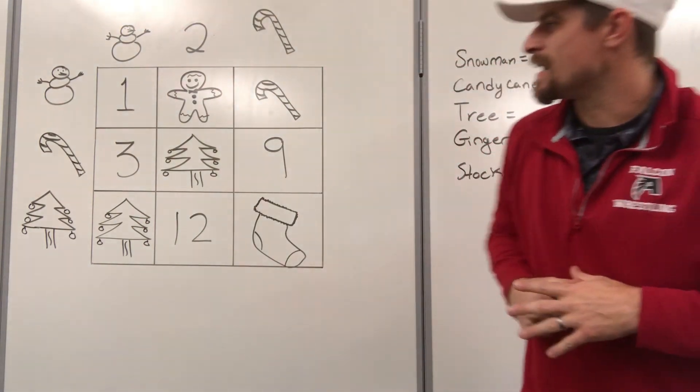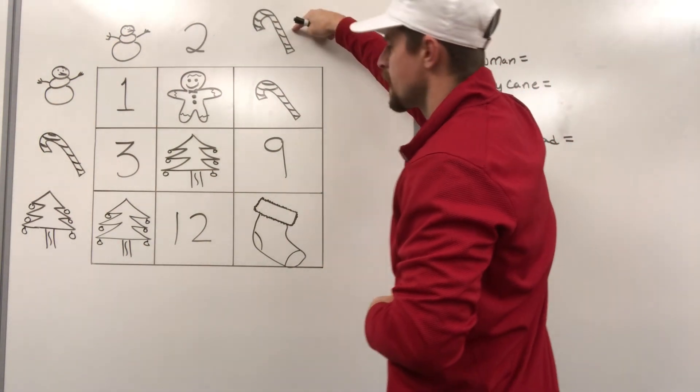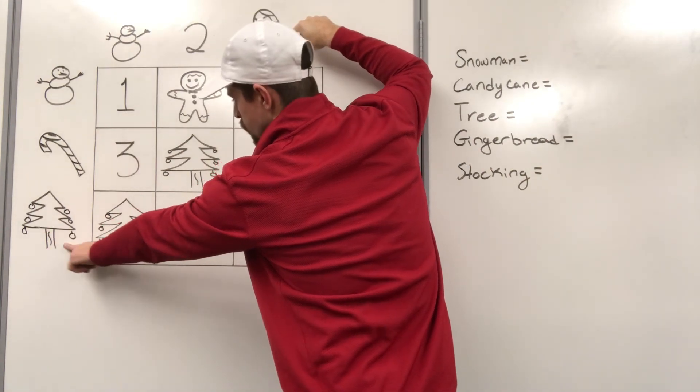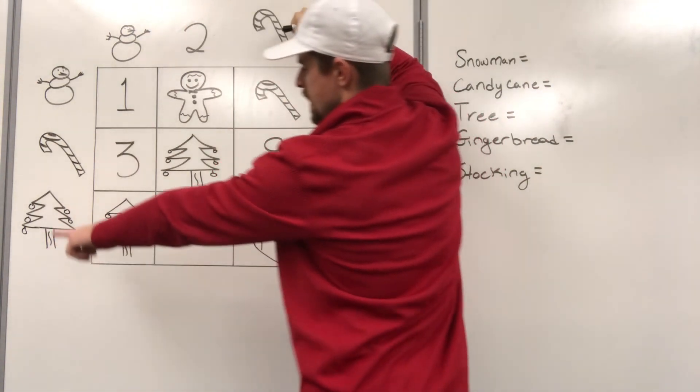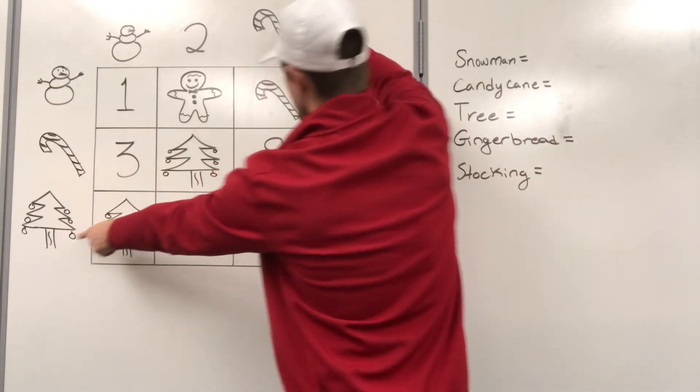What I have here is a multiplication table. How do multiplication tables work? Well, basically, you take your outside picture or value. So if I'm doing here to here, we got a Christmas tree and a candy cane. Those two values would multiply together to make a stocking where the two meet.